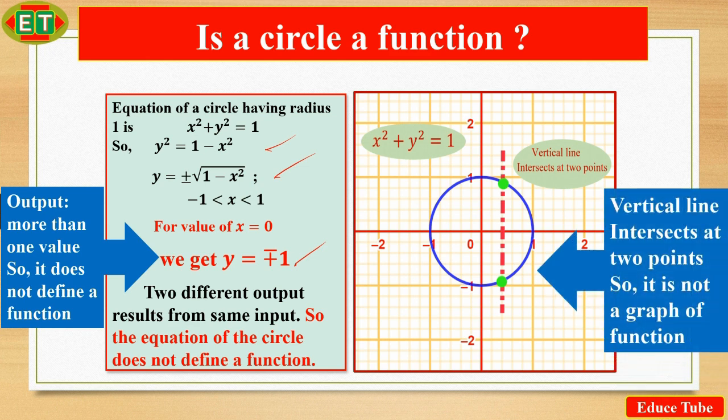Even if we look at the circle in the graph, we can see that it is not a graph of a function. Why? Because the vertical line intersects the circle twice — we can see it here: two points where this vertical line intersects.